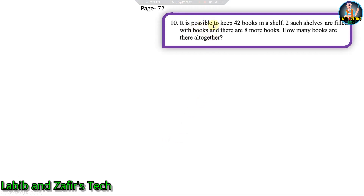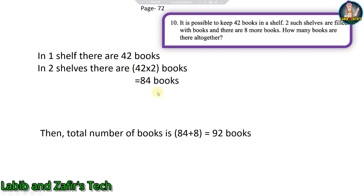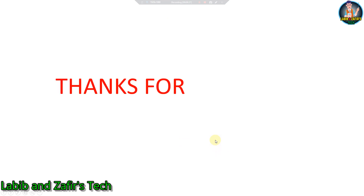Now our last word problem: it is possible to keep 42 books in a shelf. Two such shelves are filled with books and there are 8 more books. How many books are there altogether? In one shelf there are 42 books, so in two shelves there are 42 into 2 equals 84 books. Total books: 84 plus 8 equals 92 books.